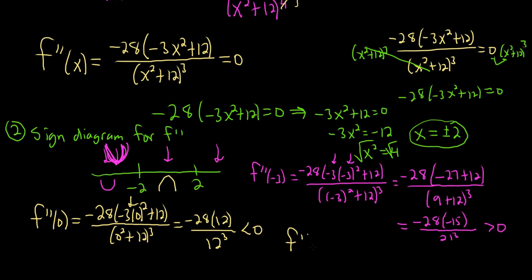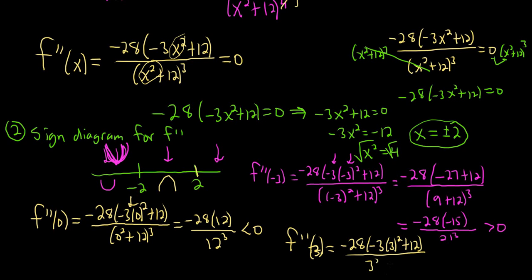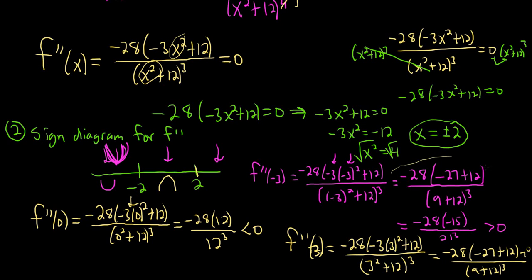Last but not least, let's try f double prime of 3 — can't use 2 since it's one of our boundary points. Because all the x's are squared, this should give the same result as the negative 3 test. Negative 28 times (negative 3 times 9 plus 12), all over (9 plus 12) cubed — it's the same expression: negative 28 times negative 15 over 21 cubed, which is positive. So it's concave up.